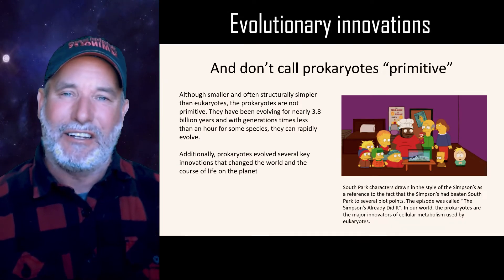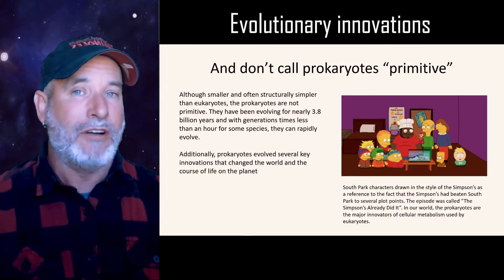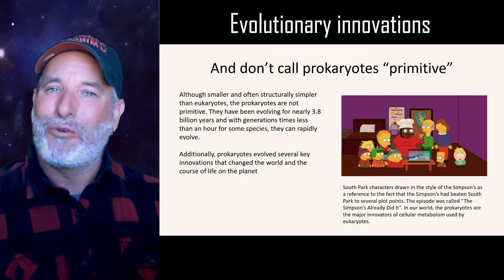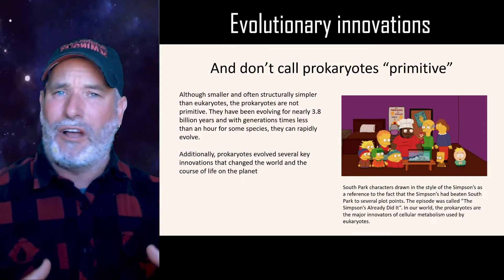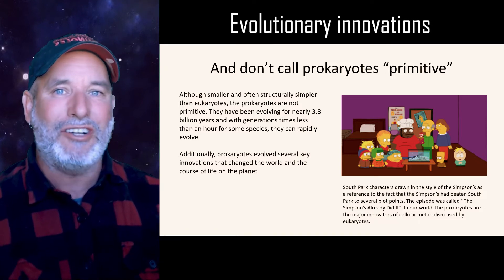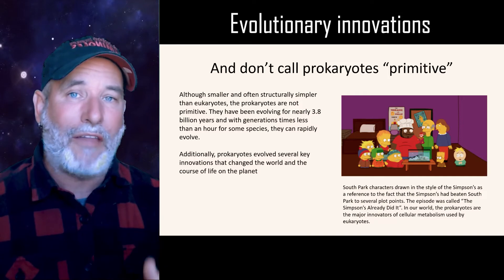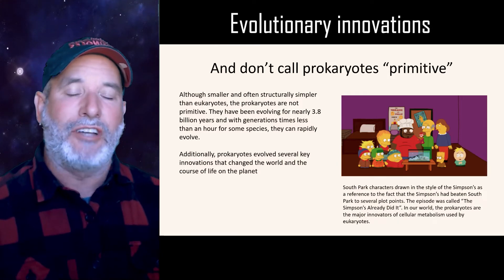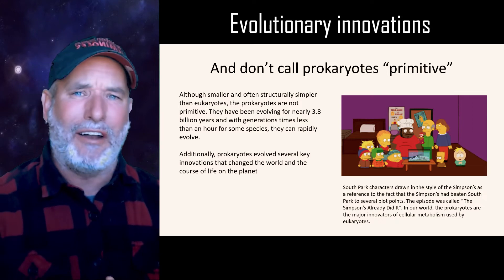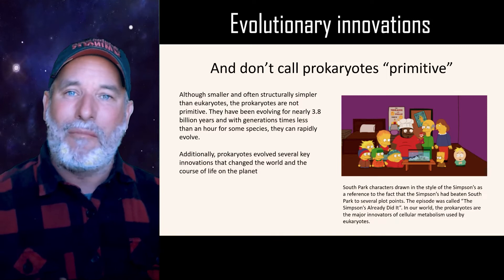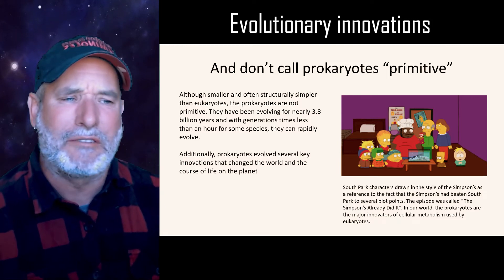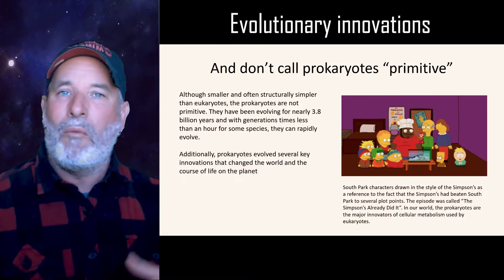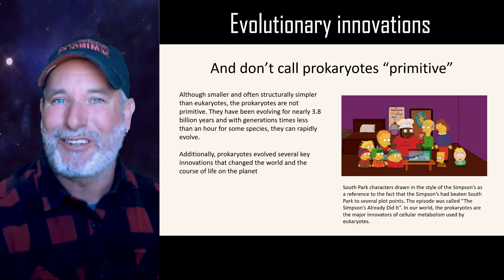We have a tendency to think of prokaryotes as primitive, but they're not. They have a short generation time — there are bacteria that might have a generation time of 20 minutes. Over the course of 3.8 billion years, that's a lot of generations, so bacteria evolve rather quickly and can easily adapt to a changing environment. Like the South Park/Simpsons analogy — prokaryotes did almost everything first, with one exception: no multicellular life. Only eukaryotes did that.